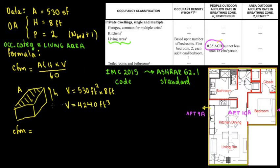The CFM is going to be air changes per hour, which is 0.35 times the volume. The volume is going to be 4240. And everything is going to be divided by 60. So the CFM required is going to be, the CFM required, let's do a very quick calculation.